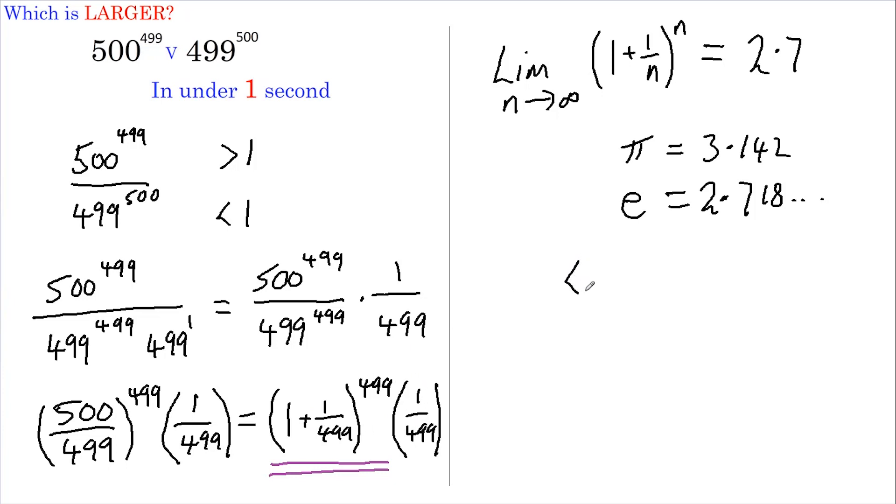In other words, all of this together has got to be less than e divided by 499, and that is a lot less than 1. And do you remember what we said at the beginning? If this is less than 1, then the denominator must be the larger number.